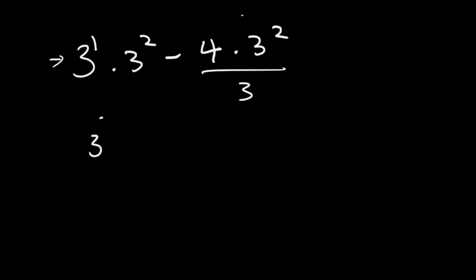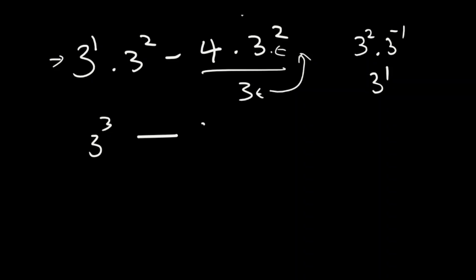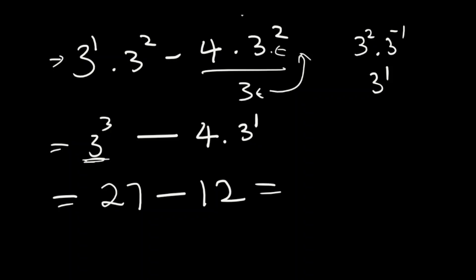From there, 3 to the power of 1 times 3 to the power of 2 gives 3 to the power of 3, since same base means you add exponents. For the second term, 3 to the power of 2 over 3 — which is 3 to the power of 2 multiplied by 3 to the power of minus 1 — gives 3 to the power of 1. So we have minus 4 multiplied by 3 to the power of 1. Punching through the calculator: 3 to the power of 3 is 27, minus 4 times 3 is 12, giving a final answer of 15.